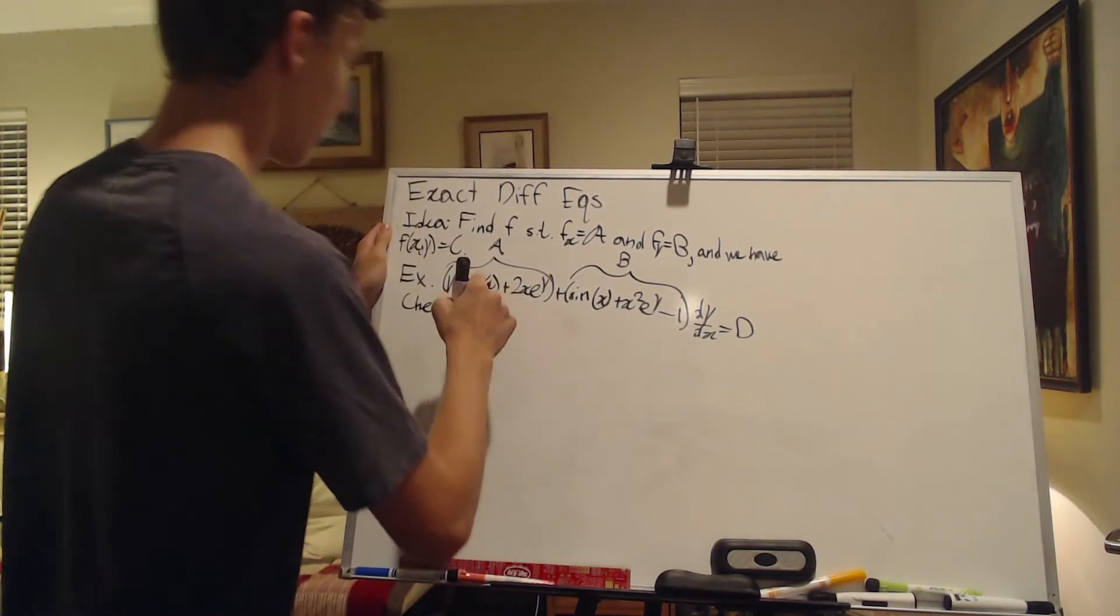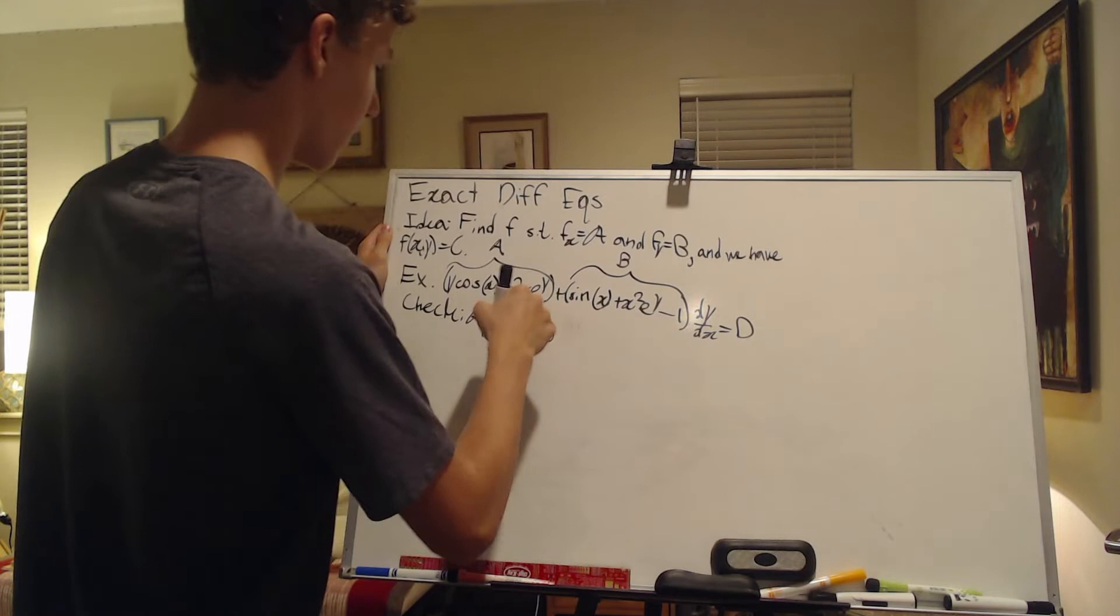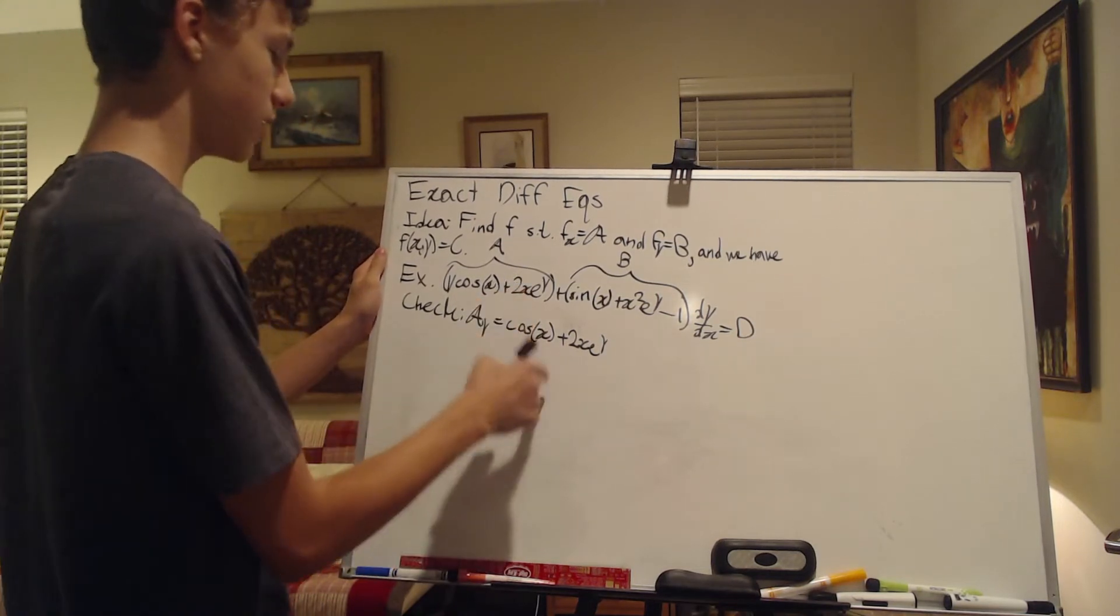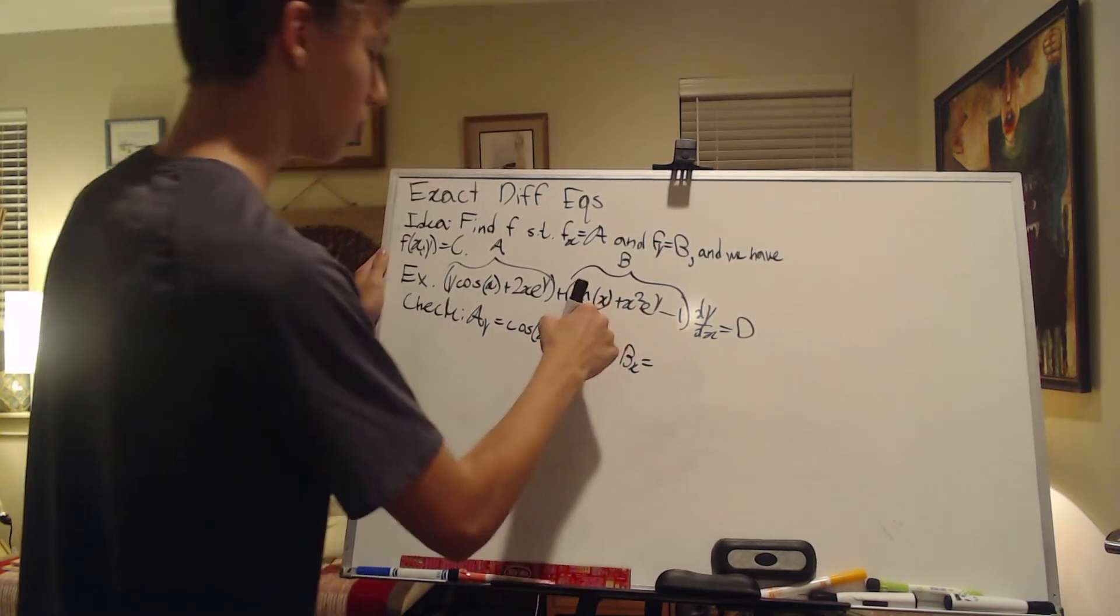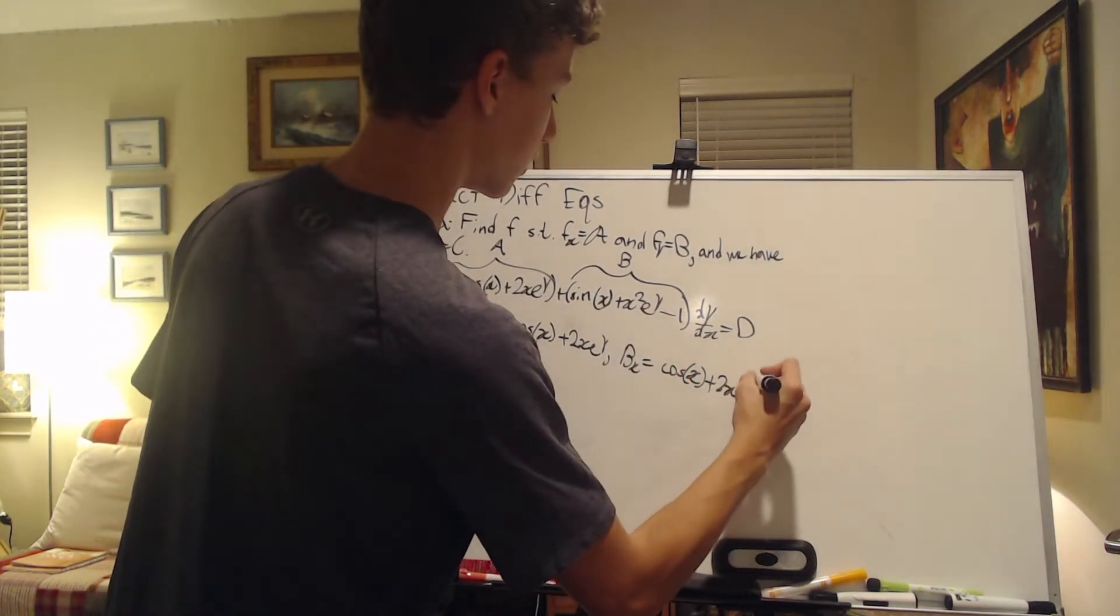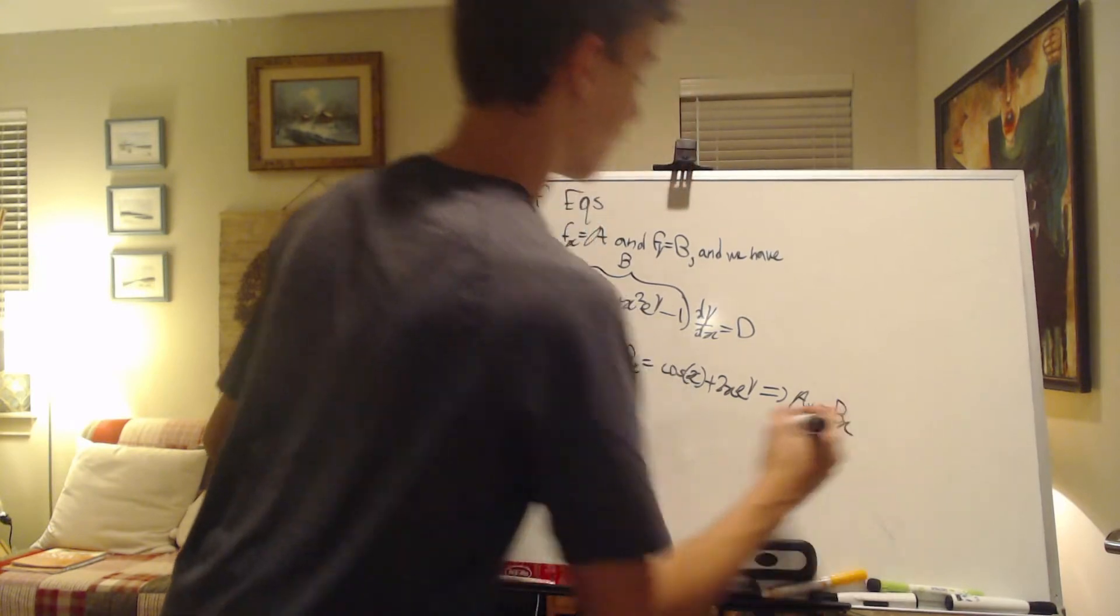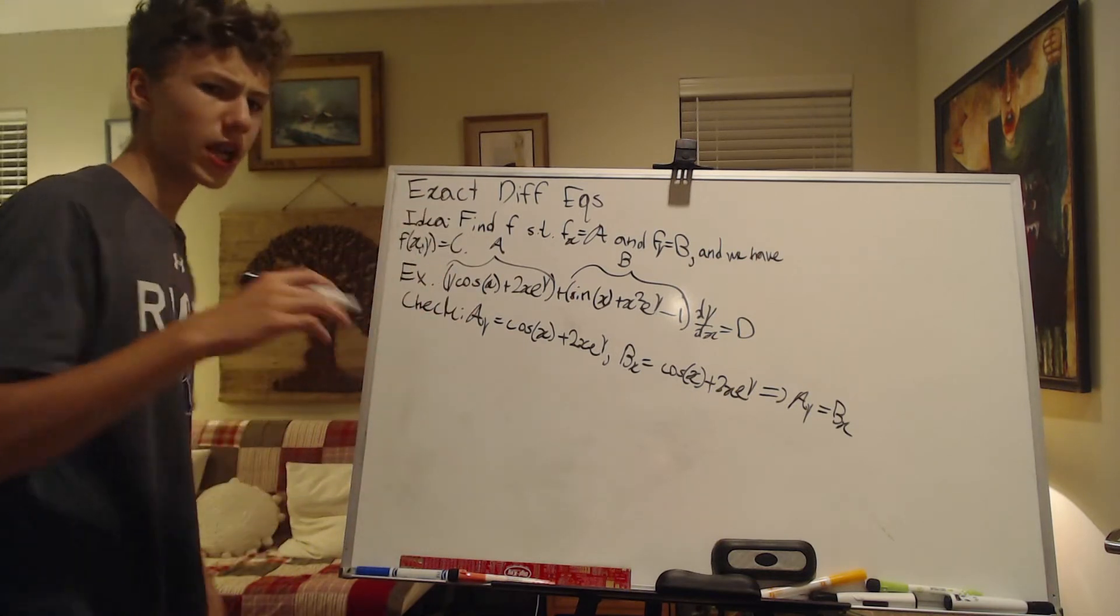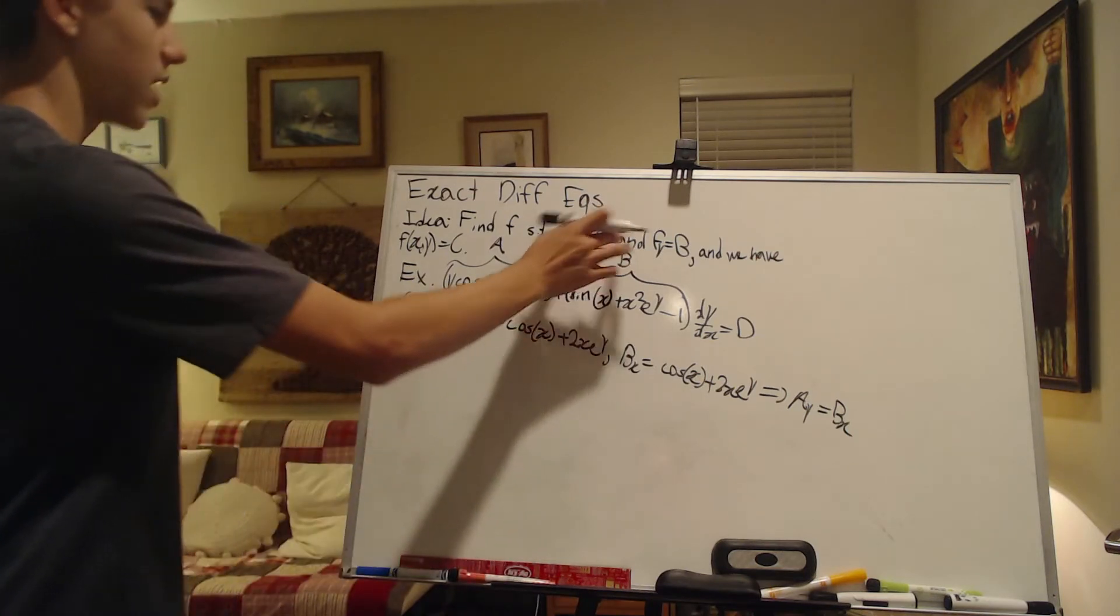A sub y, that's equal to, let's see, that's going to be cosine x plus 2x e to the y. Just leaving this piece fixed. Okay, and B sub x is equal to cosine x, derivative of sine is cosine, plus the derivative of x squared is 2x e to the y. And that's it. So that implies that A to the y equals Bx. So that's the condition that needs to be satisfied to check if a differential equation is exact. Namely, we can continue with our general method here as highlighted above.